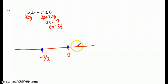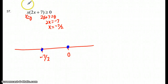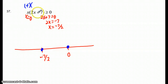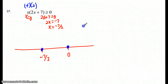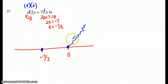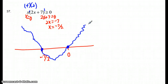I need to test some value bigger than 0 — let's test 1. The first factor gives 1, which is positive. Then 2 times 1 plus 7 is 9, which is positive. What happens when I multiply a positive times a positive? I get a positive. So my graph is going to start up here. Both exponents of the factors are 1, which means it's going to go right through those points.